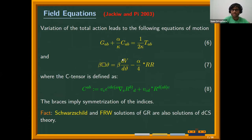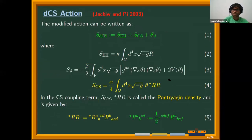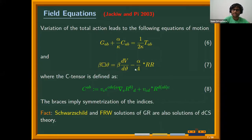The field equations for the DCS action: varying with respect to the metric gives an equation like Einstein's equation, except for the C tensor, which is related to the background theta via derivative operators and the background metric via Ricci and Riemann tensors. The scalar field equation, with potential set to zero, is just box theta equals minus alpha over 4 beta times the Pontryagin density. An interesting fact: the Schwarzschild black hole and FRW solutions of GR are also solutions of DCS theory, meaning DCS has implications for cosmology.